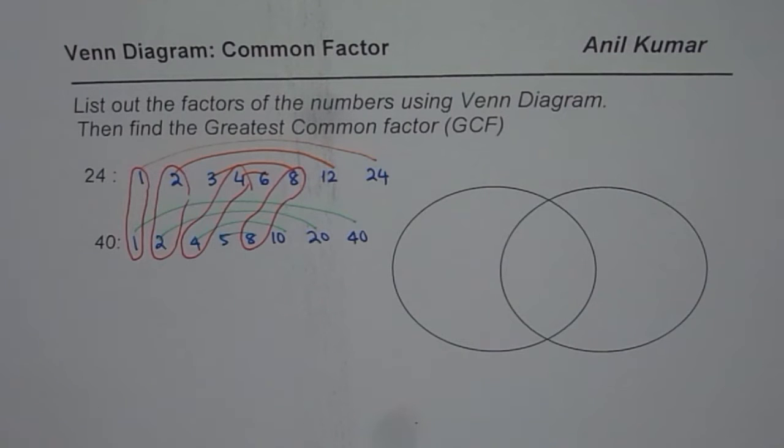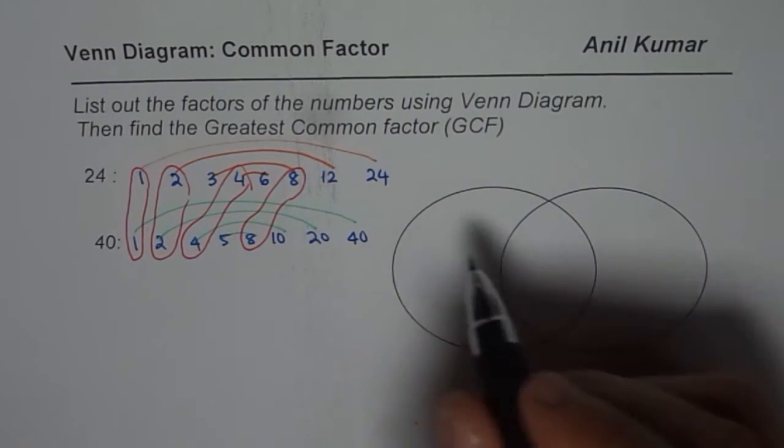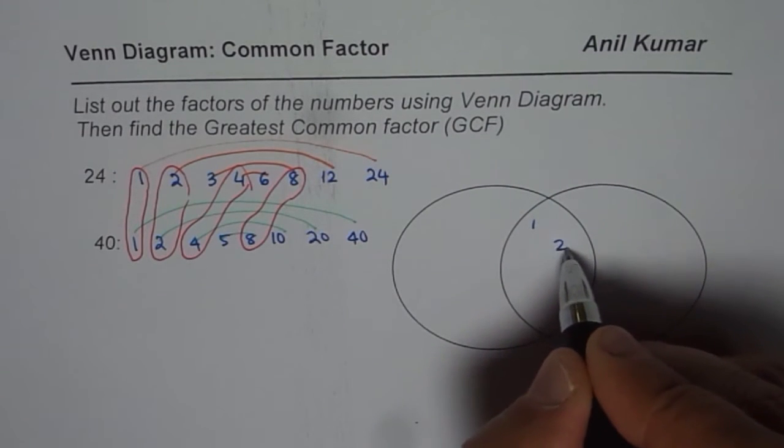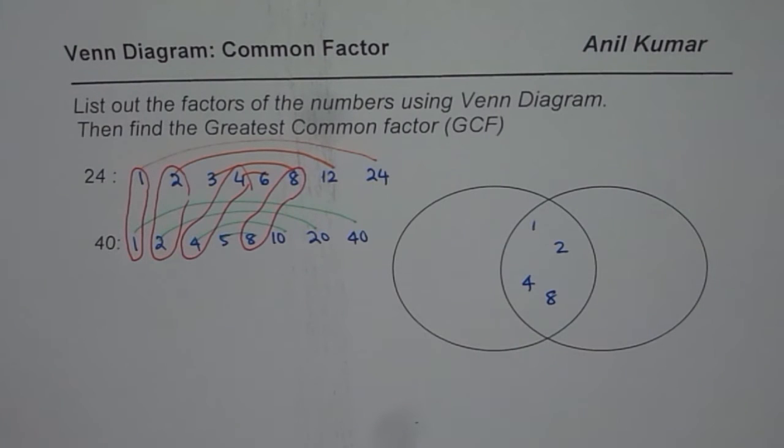So first place all the common factors right in the center. They are common to both. So 1, 2, 4 and 8. 1, 2, 4 and 8 will go in the center. These are the common factors.